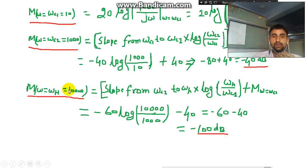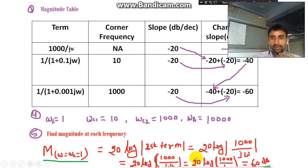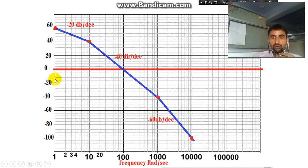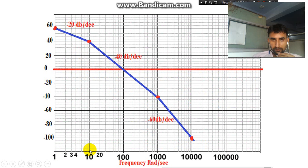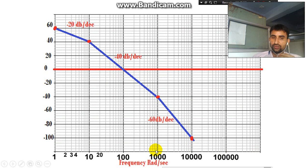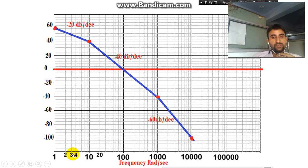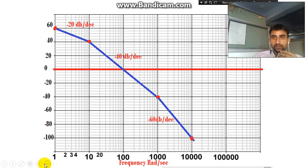To summarize the magnitude values: at ωh = 10,000 we have −100 dB; at ωc2 = 1000 we have −40 dB; at ωc1 = 10 we have +40 dB; and at ωl = 1 we have +60 dB. Now we go to the semi-log graph. On this graph the first thick line starts at 1 (or 0.1, or whatever your lowest value is) and each subsequent thick line is a multiple of 10: 1, 10, 100, 1000, 10,000, and so on.